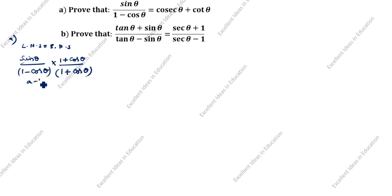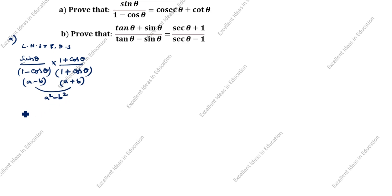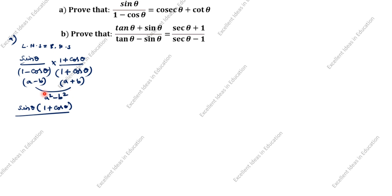What is this? A minus B, and this is A plus B. The A minus B times A plus B formula gives A squared minus B squared. So we get sin theta, open the bracket: 1 plus cos theta, divided by 1 minus cos squared theta.